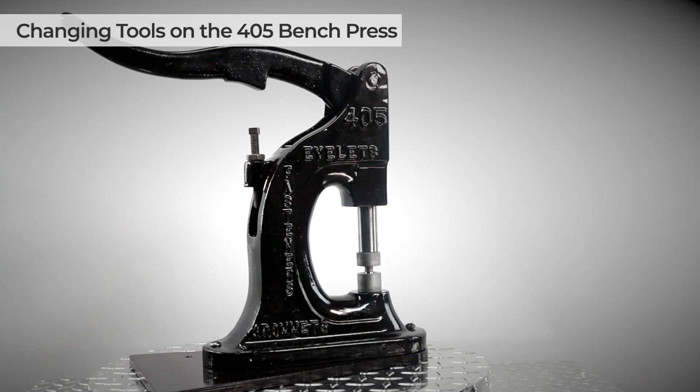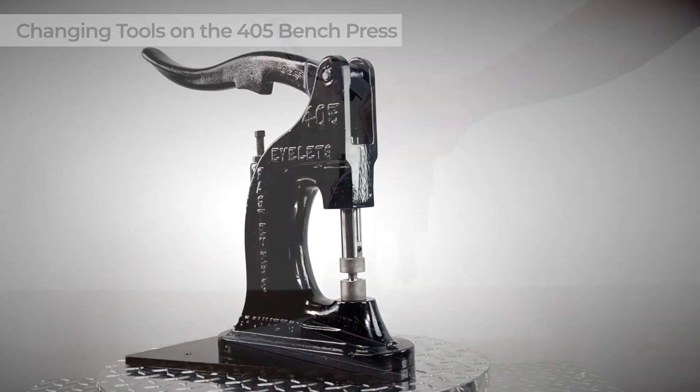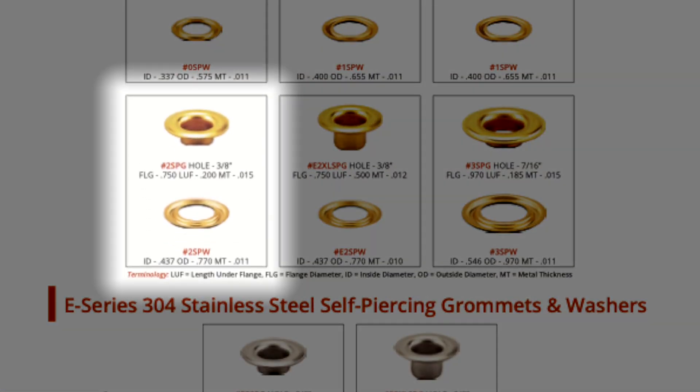snaps, clamps, and more. All you need to do is put the correct tool in the press. This 405 is set up for number two self-piercing grommets and washers, which are the most commonly used items on the 405.